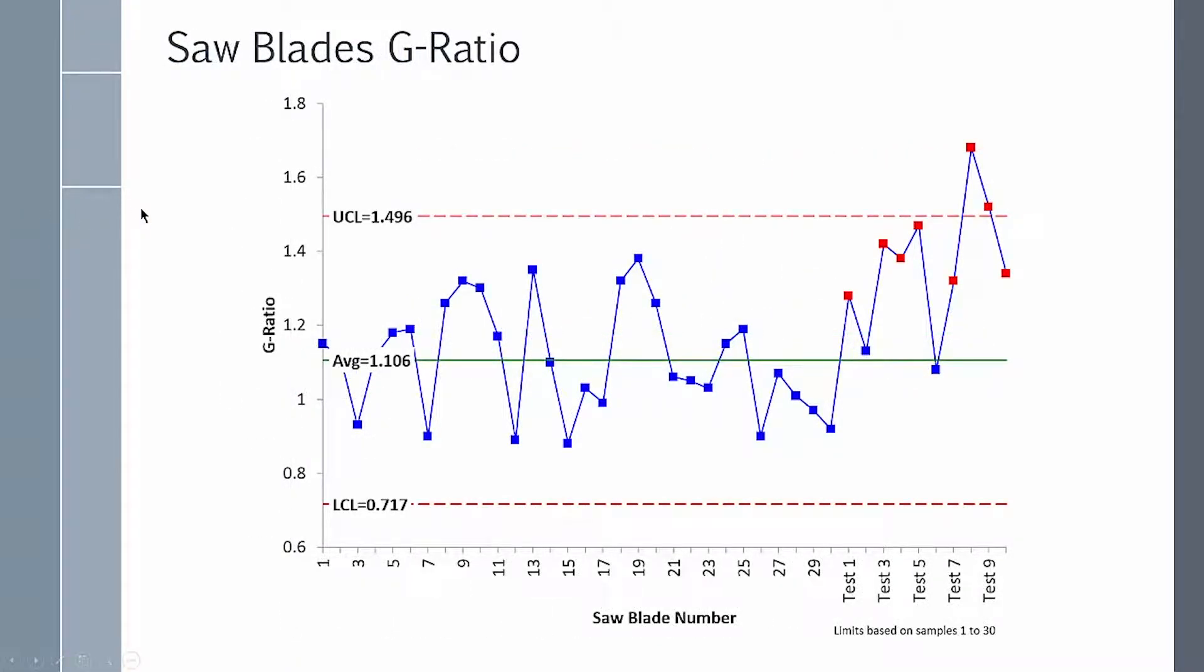You can also use control charts for saw blades. G-ratio is a measure of how much material blades cut. You want it to be higher. Here we have 30 blades that we use as our baseline data. And then we had 10 blades that we tested. And we want the G-ratio to increase. And here's a control chart that easily shows that increase in G-ratio with the test blades, telling us we need to change to the new test blades.